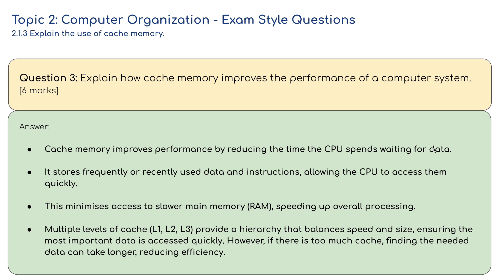Question three answer: cache memory improves performance by reducing the time the CPU spends waiting for data. It stores frequently or recently used data and instructions, allowing the CPU to access them quickly, minimizing access to slow main memory (RAM) and speeding up overall performance. Multiple levels of cache — level 1, 2, and 3 — provide a hierarchy that balances speed and size, ensuring the most important data is accessed quickly. However, if there is too much cache, finding the needed data can take longer, reducing efficiency.